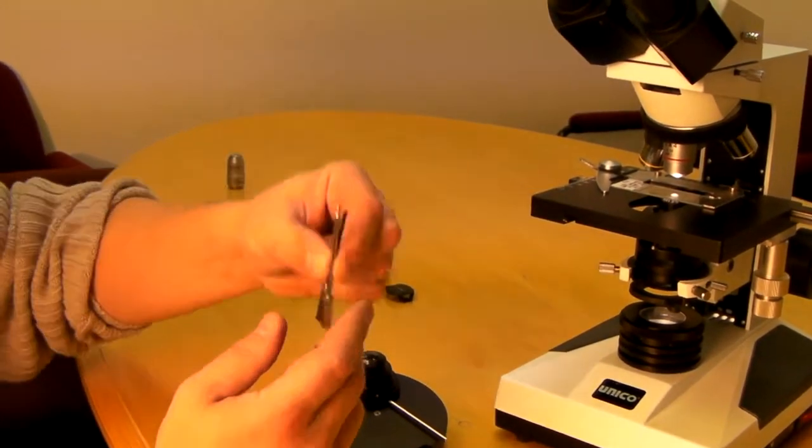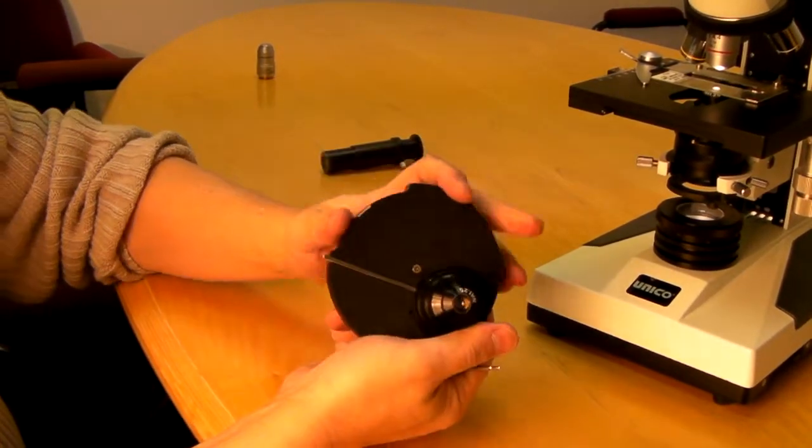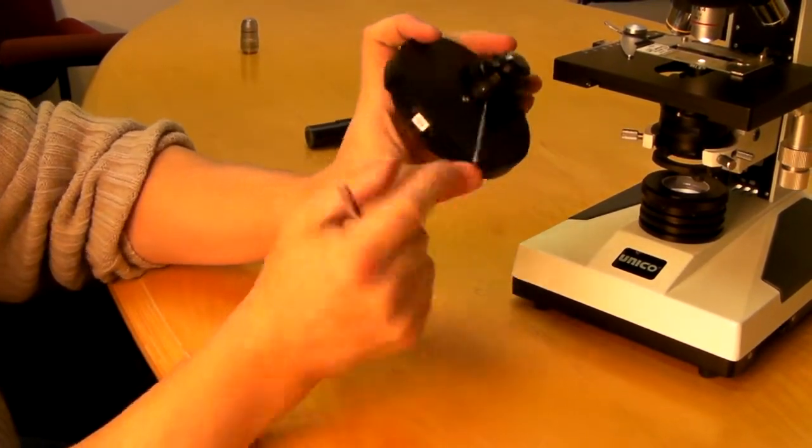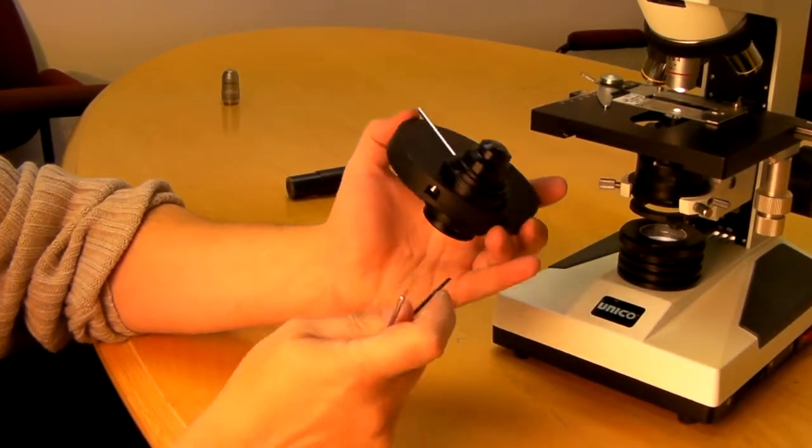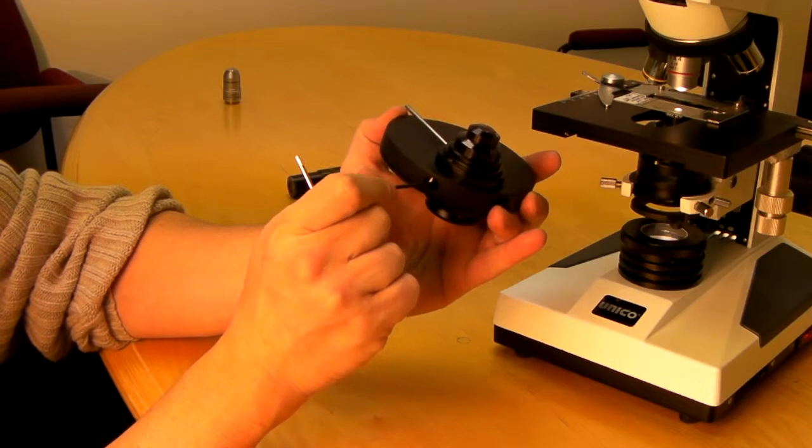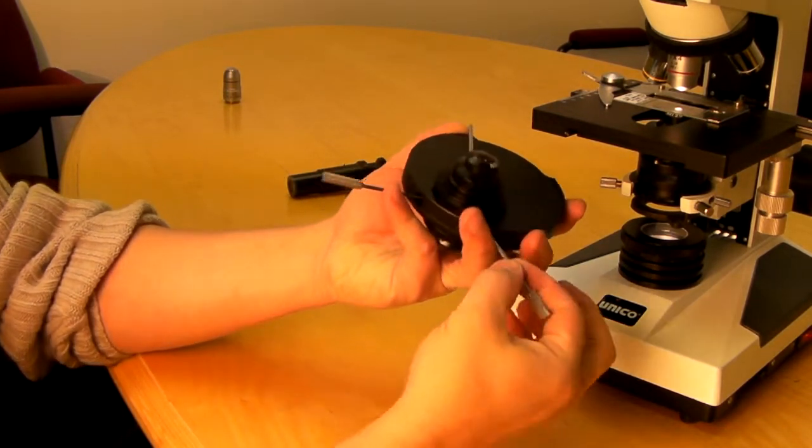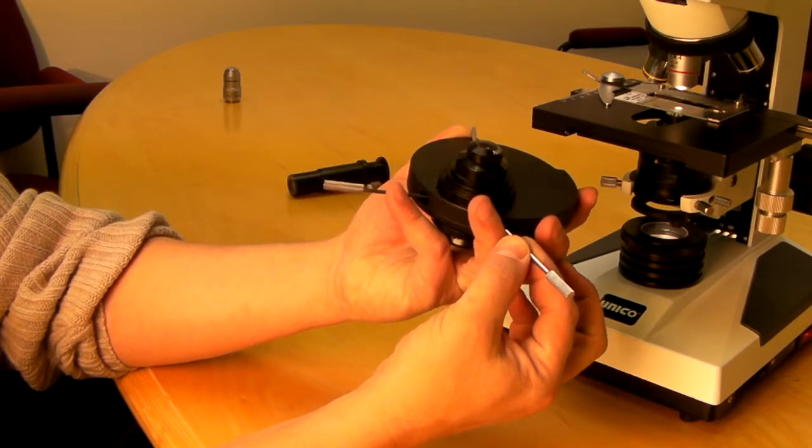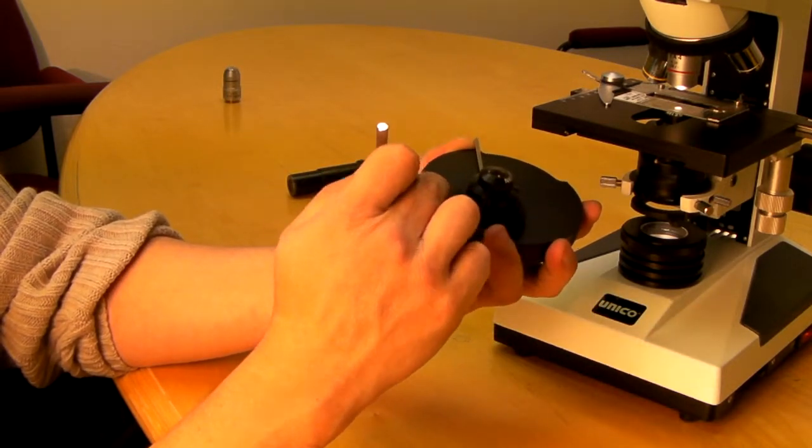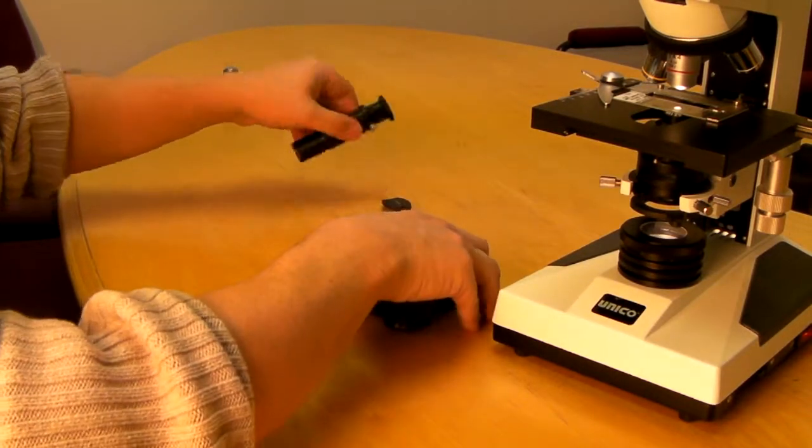You will also have two allen keys on the back of this condenser. When you set it, let's say to 10x, you will see two allen screws. These two allen screws can be manipulated by those keys to center the lens in its proper place. I will show you how it's done.